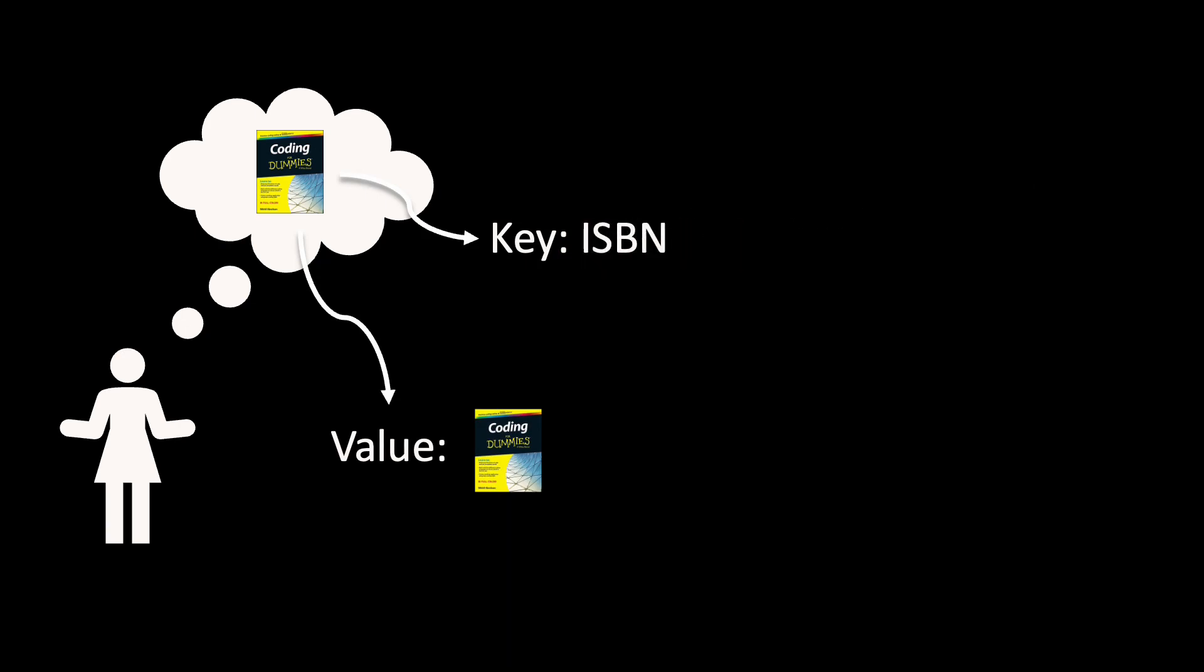Every book has a unique key, which is the ISBN. Each key is associated with a value, for instance the location of the book, or a digital version of the book itself.